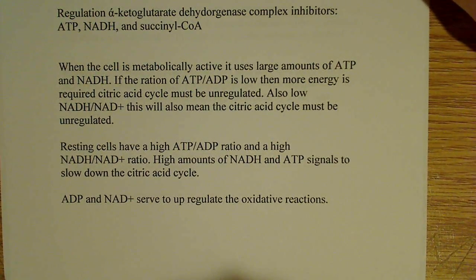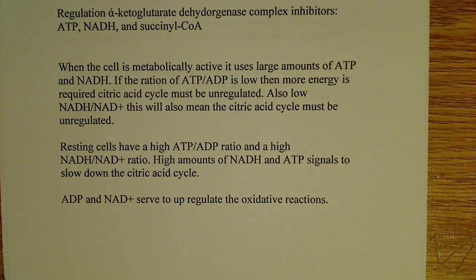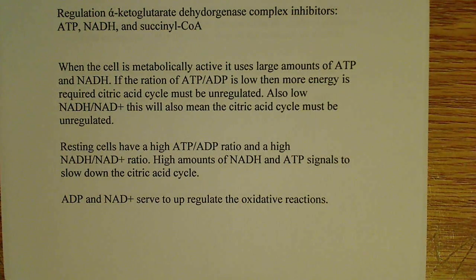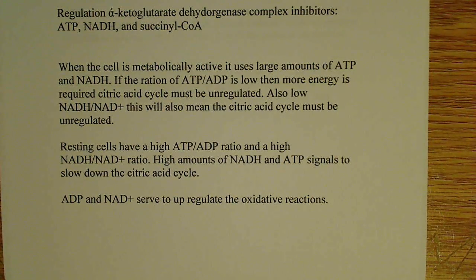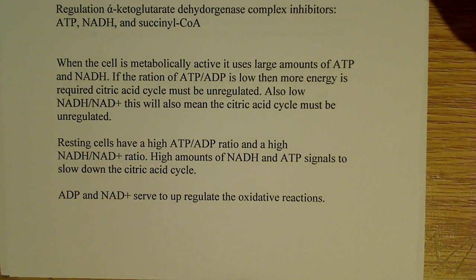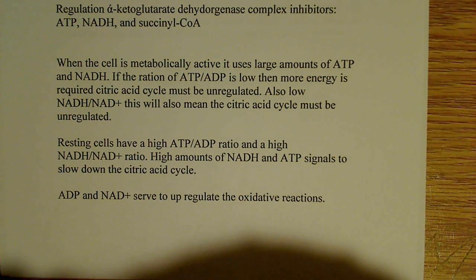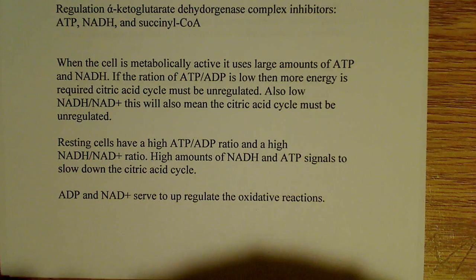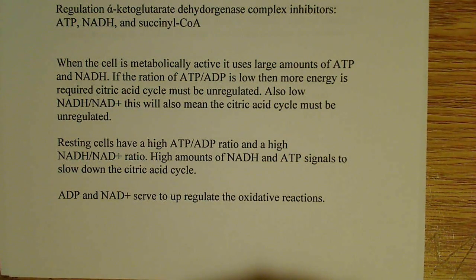These ratios become important and are a common exam question. When the cell is metabolically active, it uses large amounts of ATP and NADH. So if the ratio of ATP to ADP is low, more energy is required — the citric acid cycle must be upregulated. Similarly, if the NADH to NAD+ ratio is low, you need energy and it's time to upregulate the cycle. These ratios in the cell are a determining factor in whether the citric acid cycle is upregulated or downregulated — one of the essential factors in that regulation.